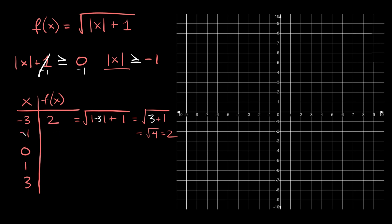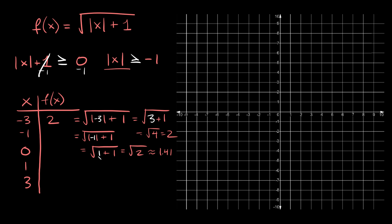Now let's plug in negative 1. f(x) equals the square root of the absolute value of negative 1 plus 1. The absolute value of negative 1 is positive 1, so we get 1 plus 1, which gives us the square root of 2. Plugging that into a calculator, that's approximately 1.41. So when we plug in negative 1 we get approximately 1.41.